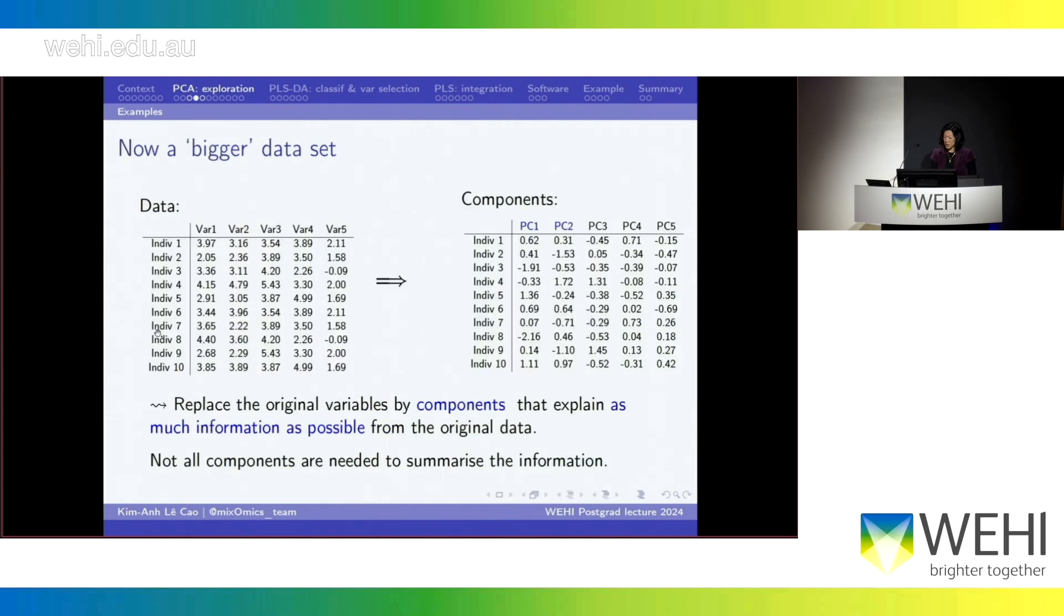I can show you another example that is a bit larger. So here we have still 10 individuals, and this time I've measured five variables. If you plug that into a PCA, you're going to obtain something that looks very similar to this data set. You still have your 10 individuals, but this time you have those principal components. And I want to remind you that a principal component will be a linear combination of those five variables. So it looks different from the original data, and that they will replace completely your original data set.